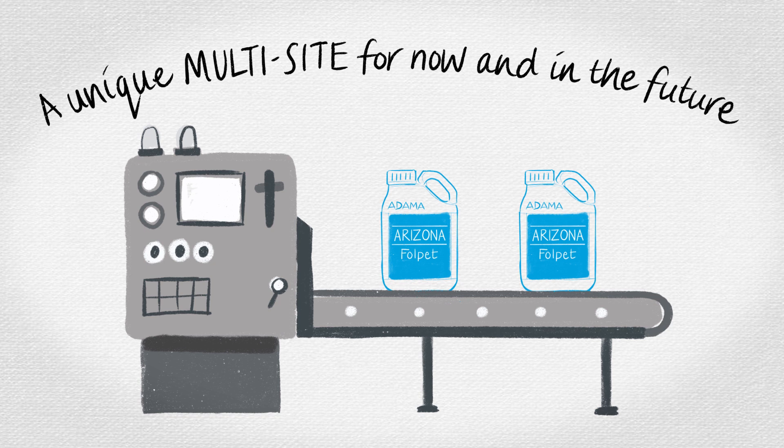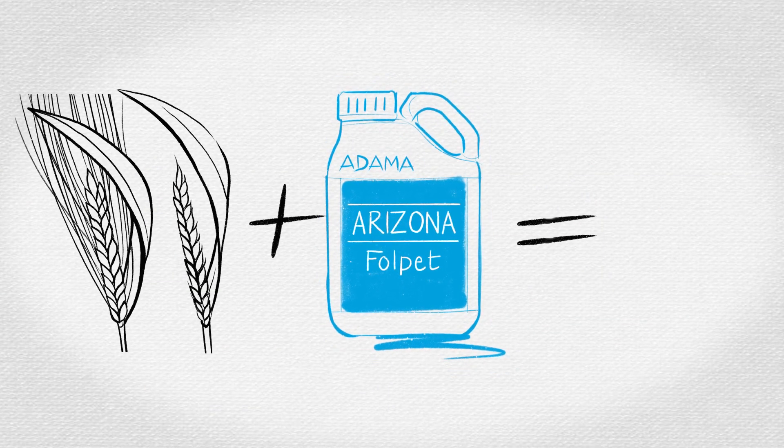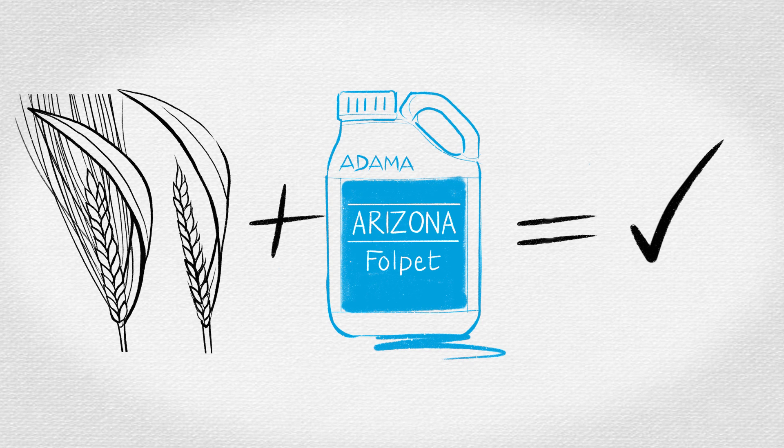Arizona not only provides effective protection against septoria in wheat, it can also help to reduce ramularia infections, particularly when used in a program.